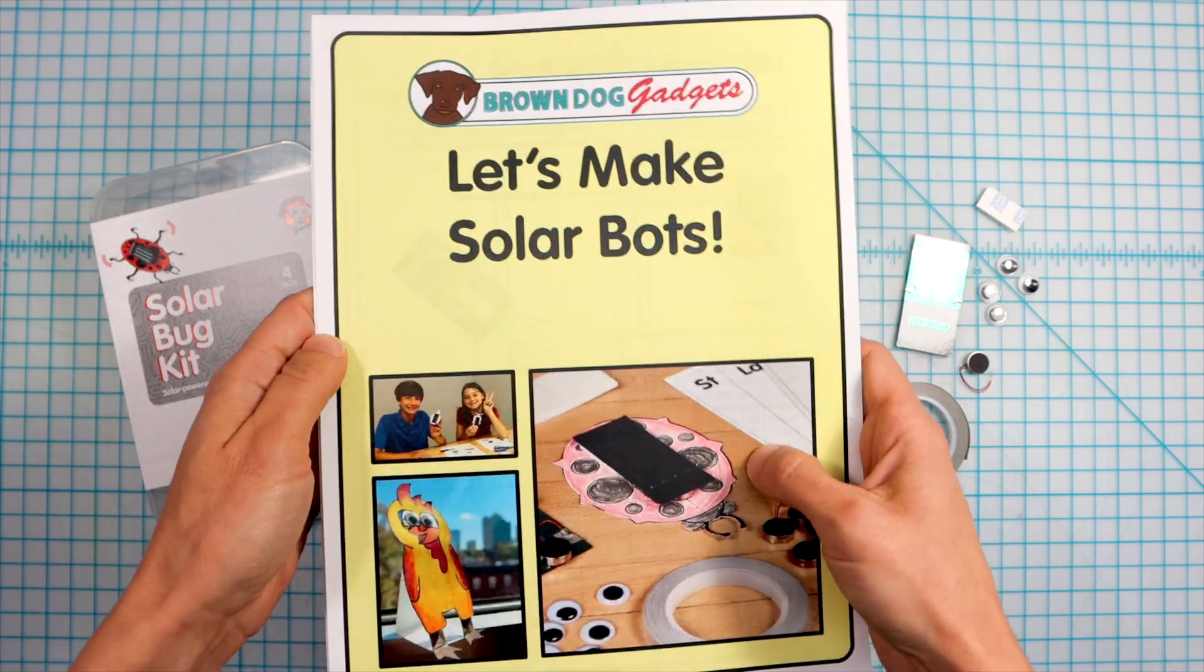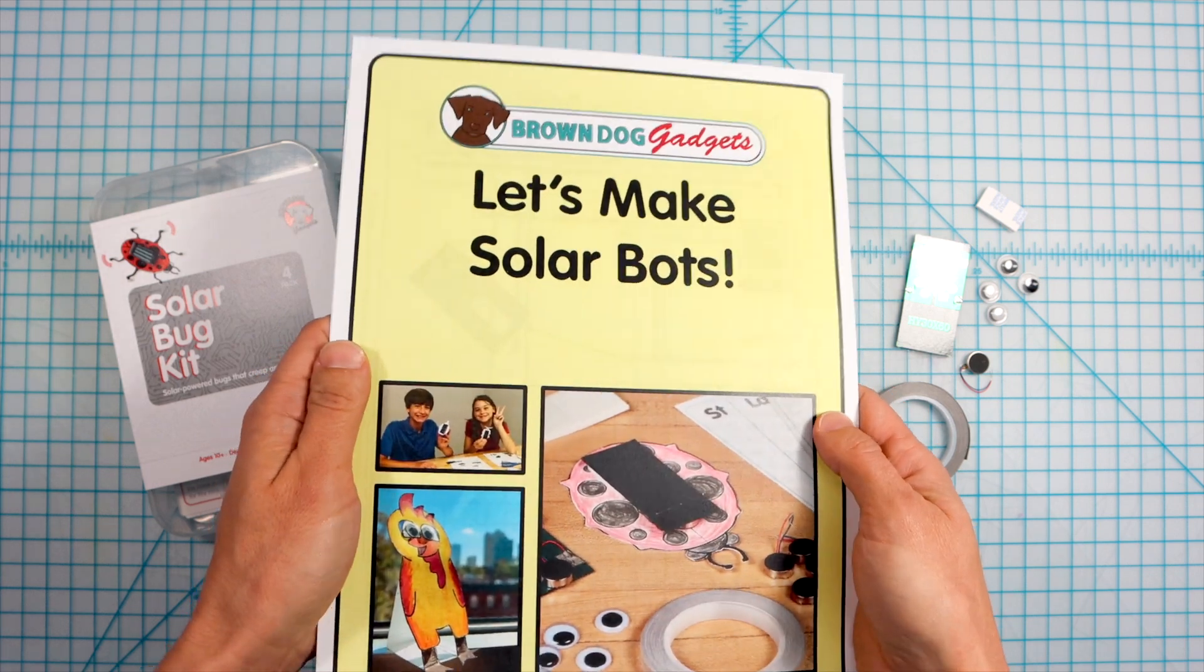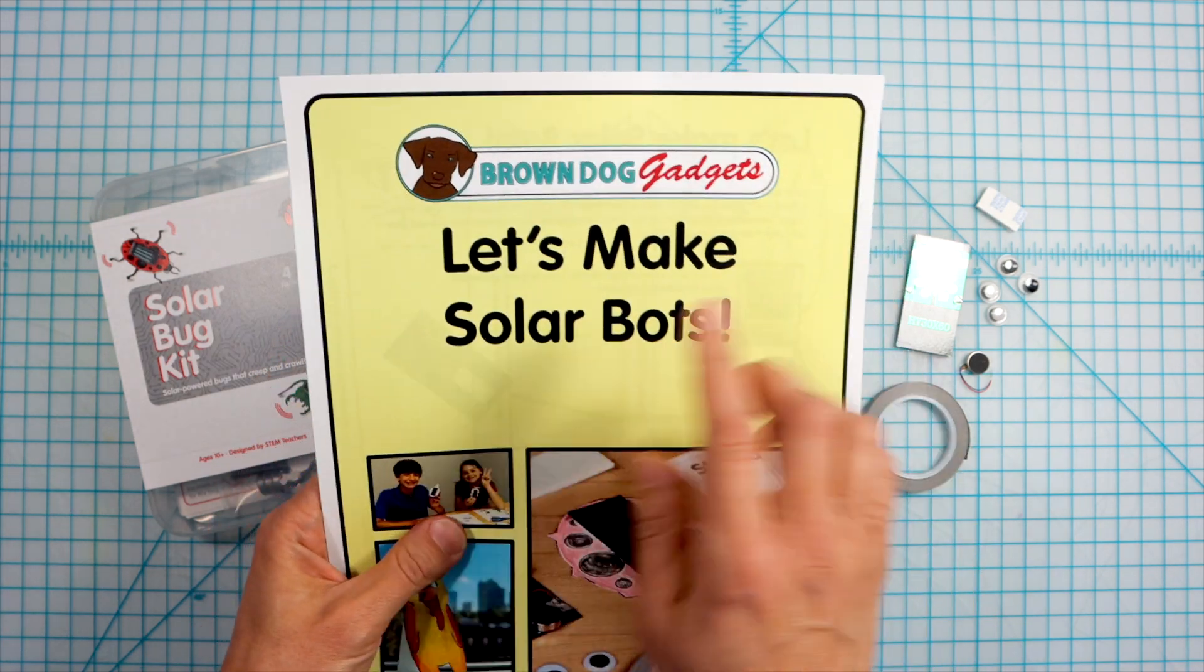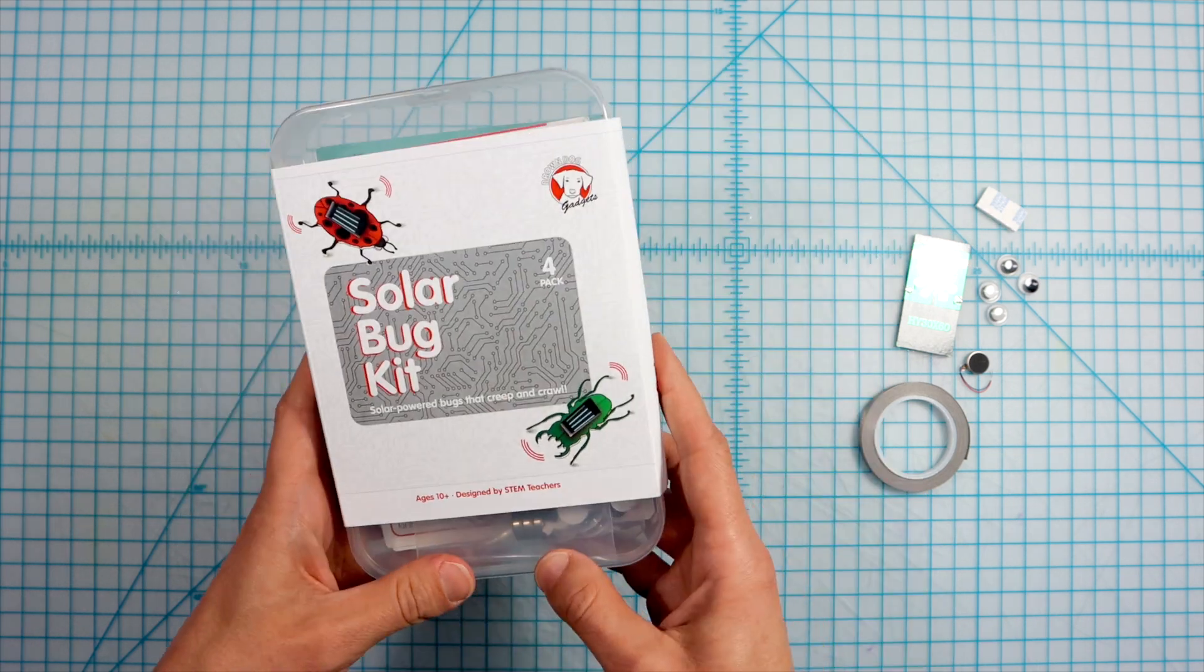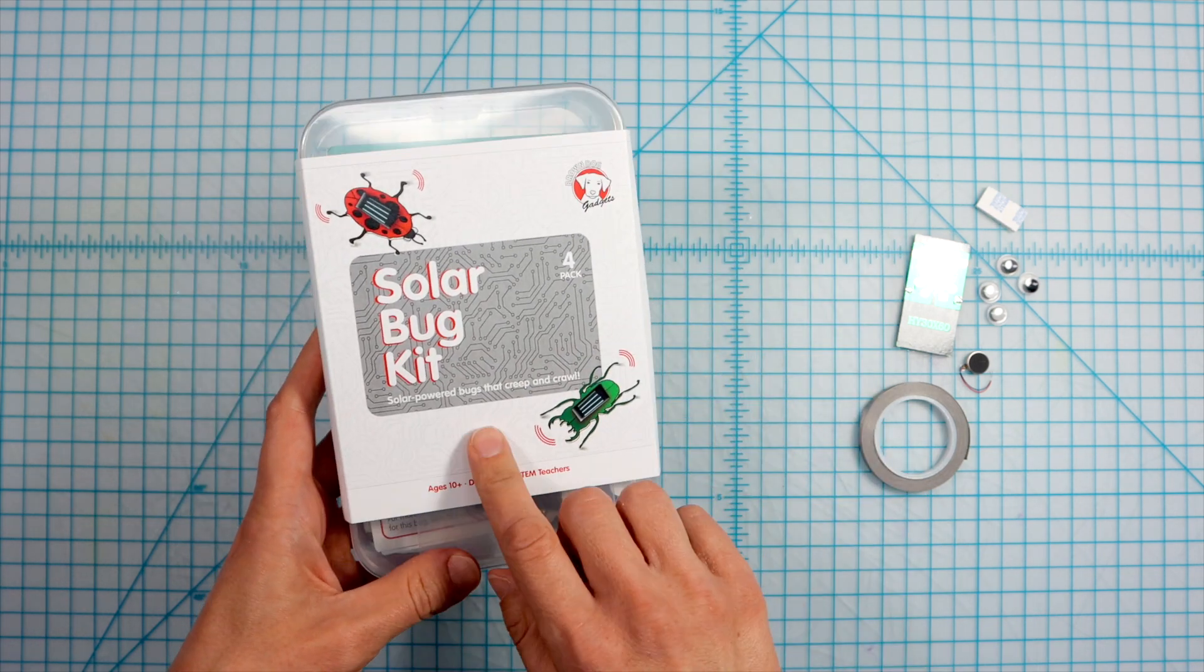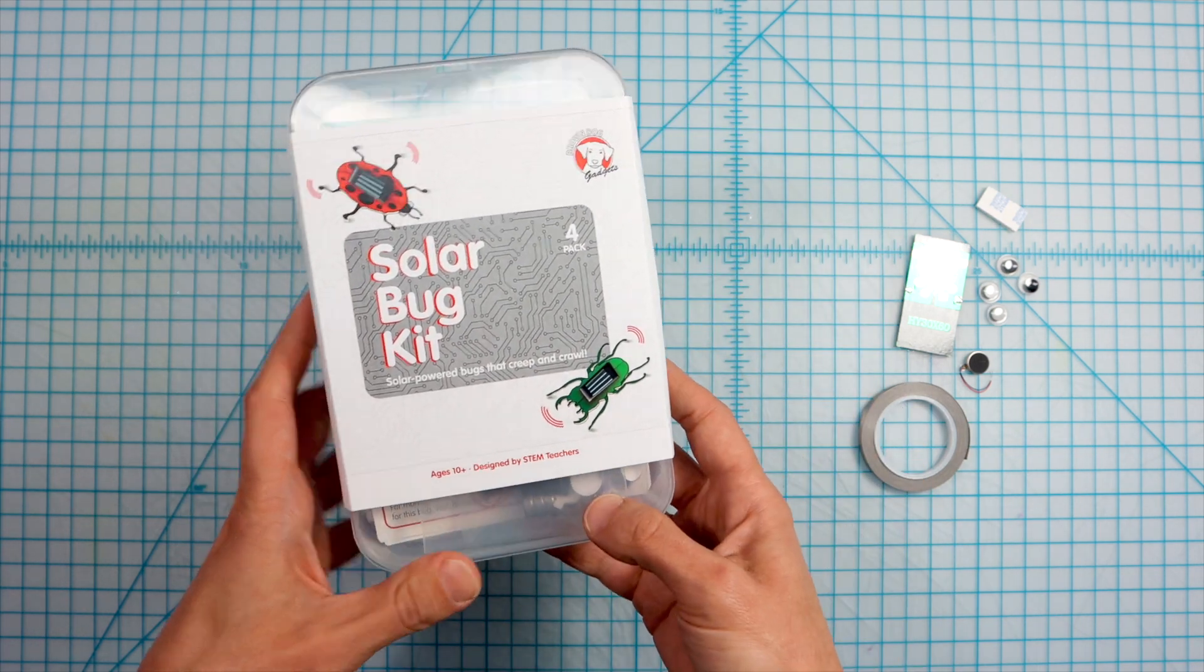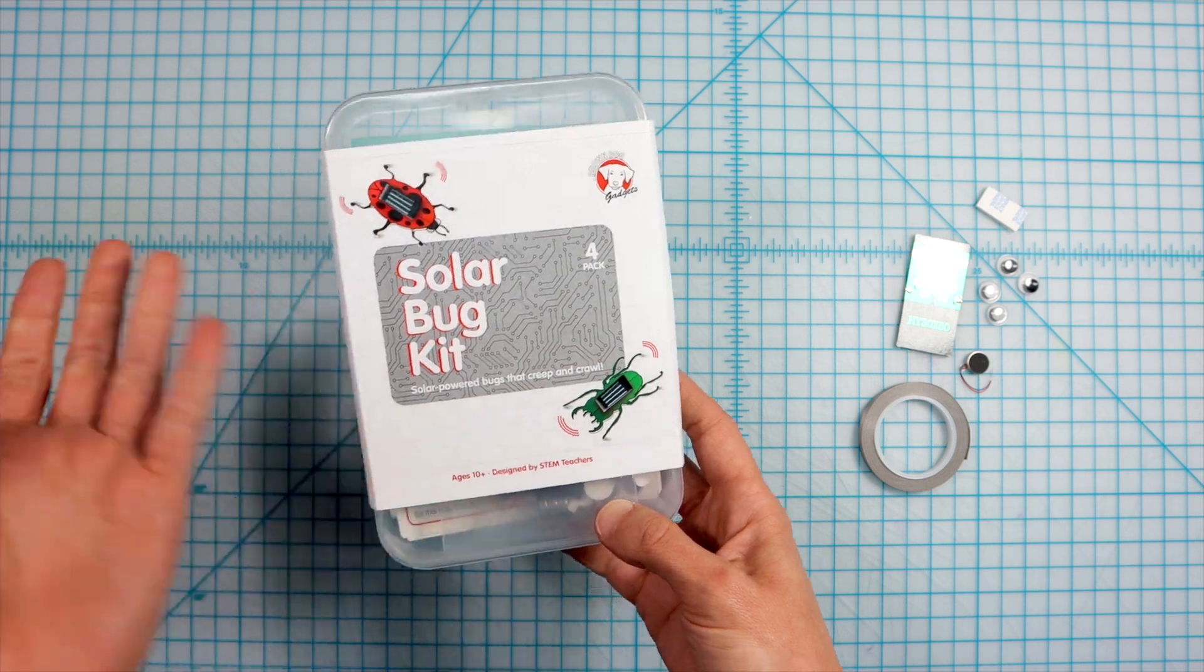Everything in this video is in the Let's Make SolarBots eBook, available to download for free on BrownDogGadgets.com. The materials in this video come in the SolarBug kit and can be purchased in many quantities for workshops or individual use.